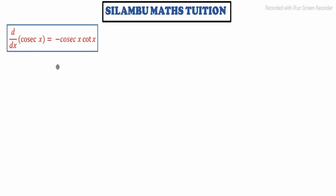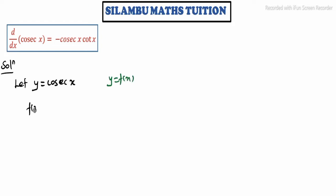Hi student, this is Shalam institution. Now we are going to find the derivative of cosecant x. So solution: let y is equal to cosecant x. We know that y is nothing but f of x. So in the place of y, f of x applied is equal to cosecant x. First principle format apply pannla.